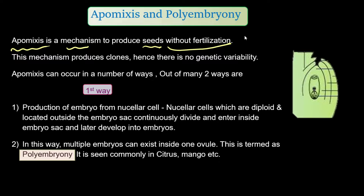In sexual reproduction there is genetic variability, meaning offspring are quite different compared to parents — similar but not same. But in apomixis, seeds are produced without fertilization, which is the reason why formation of clones occurs. Clones are individuals which are the same as the parents.